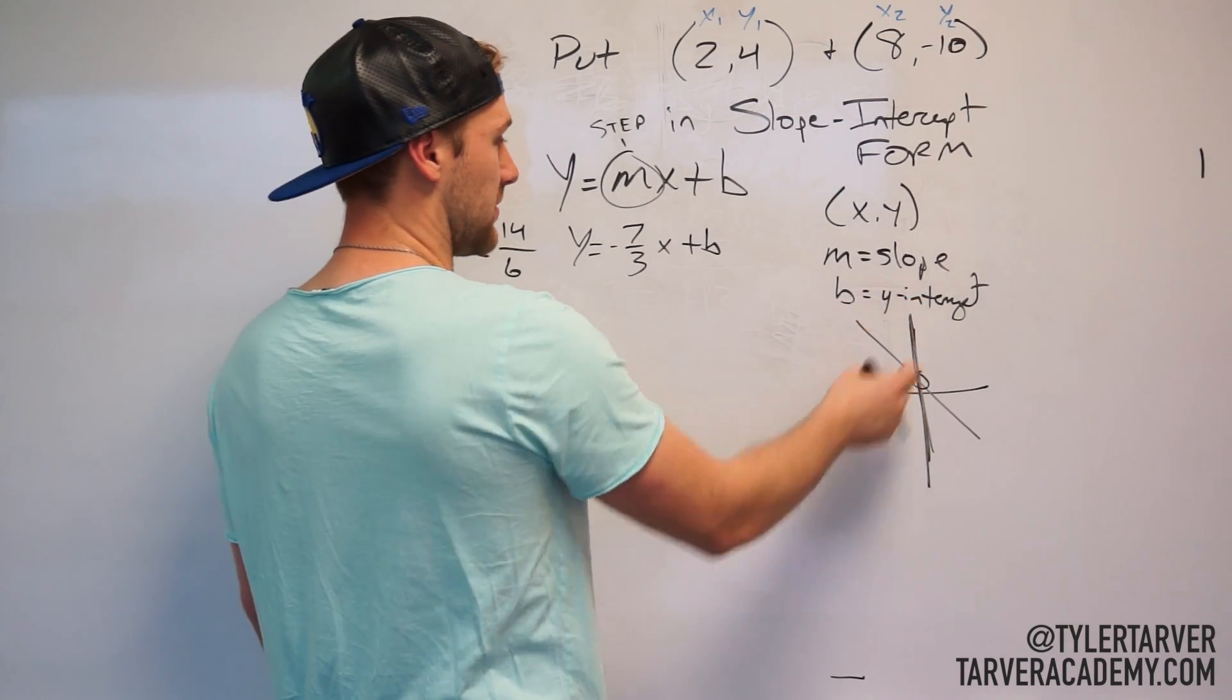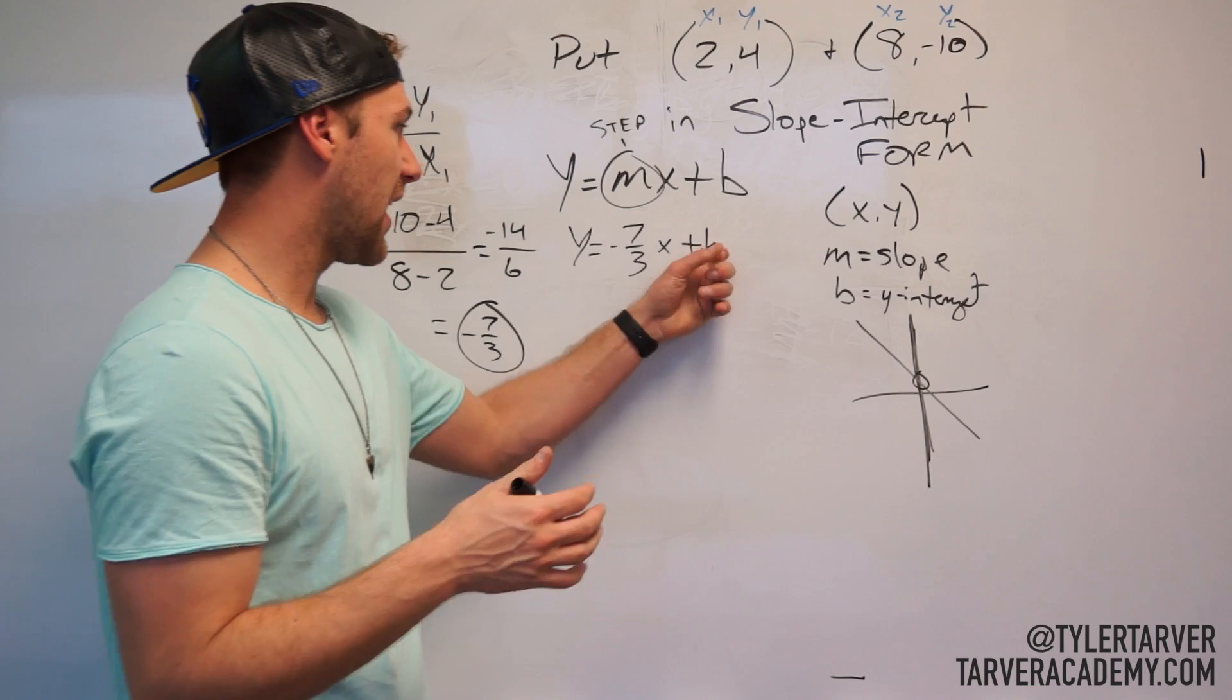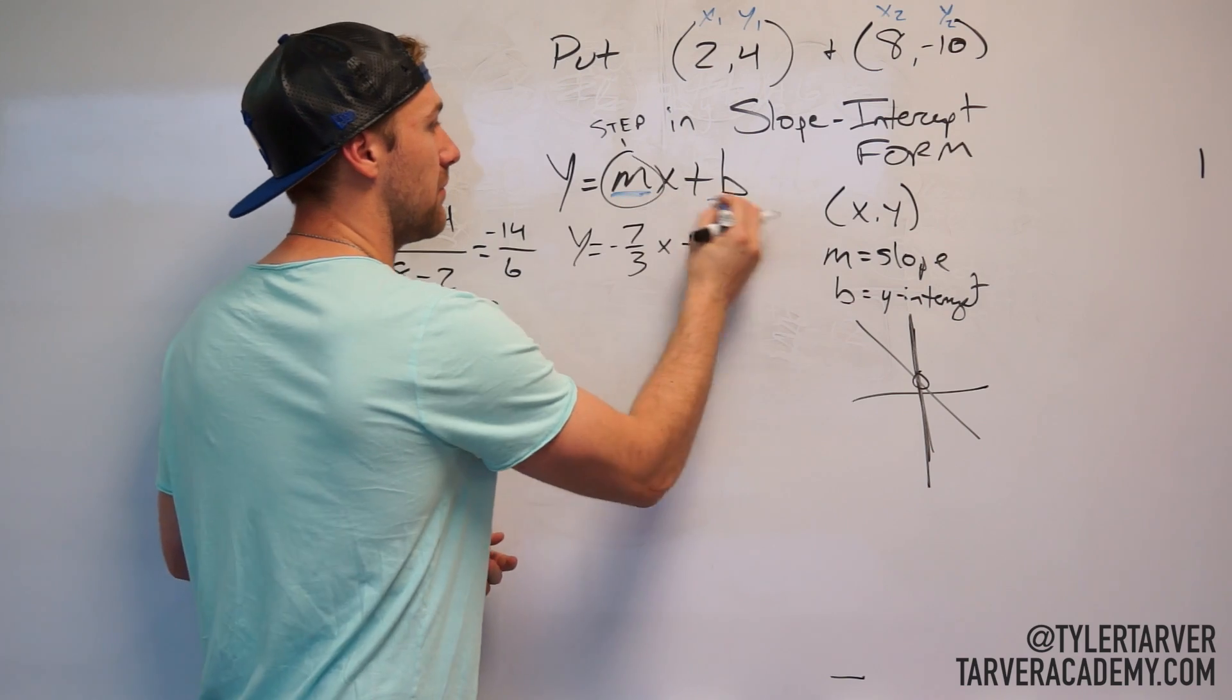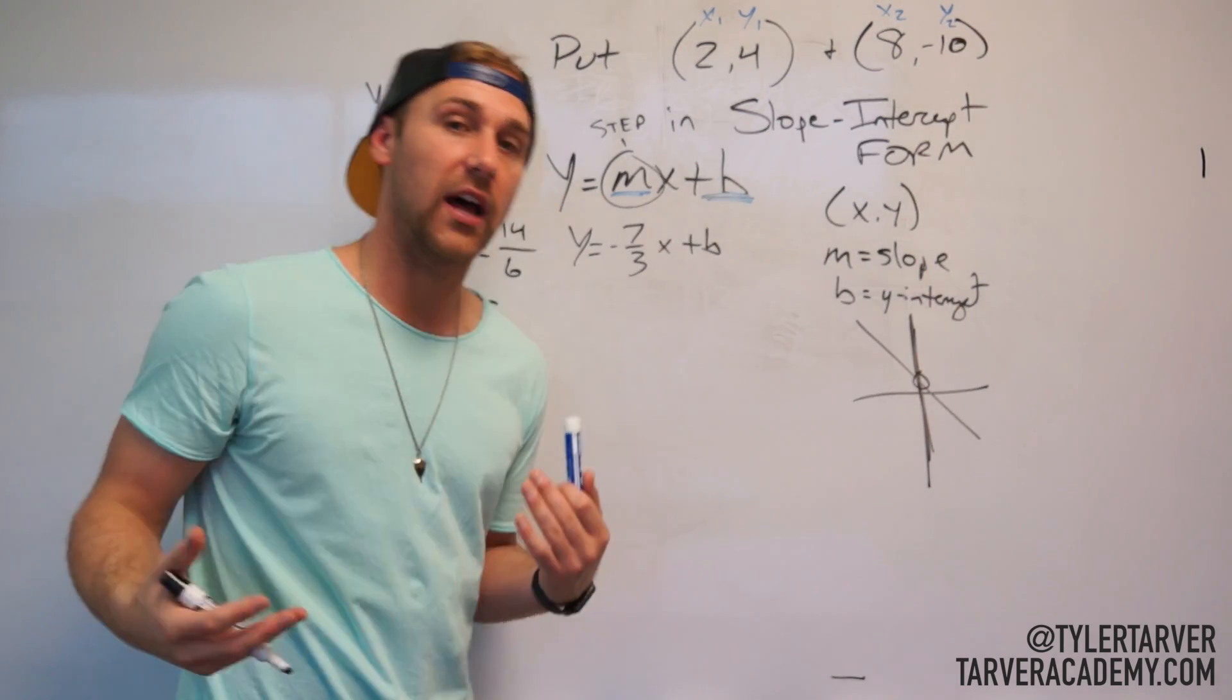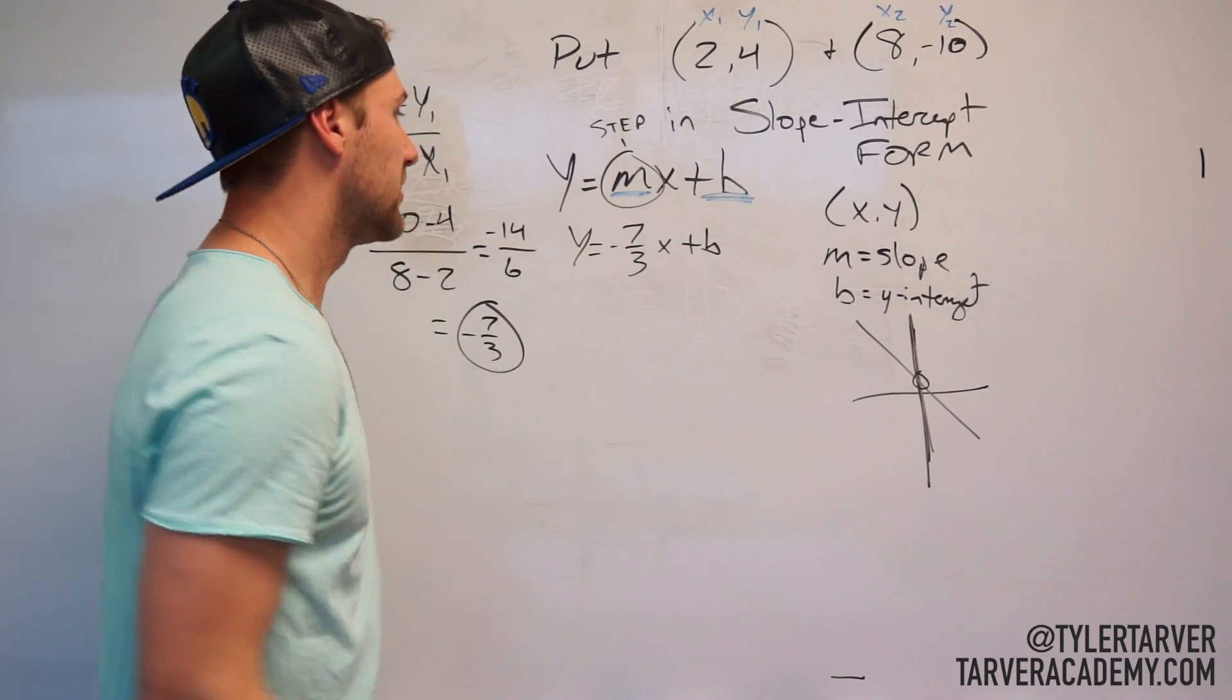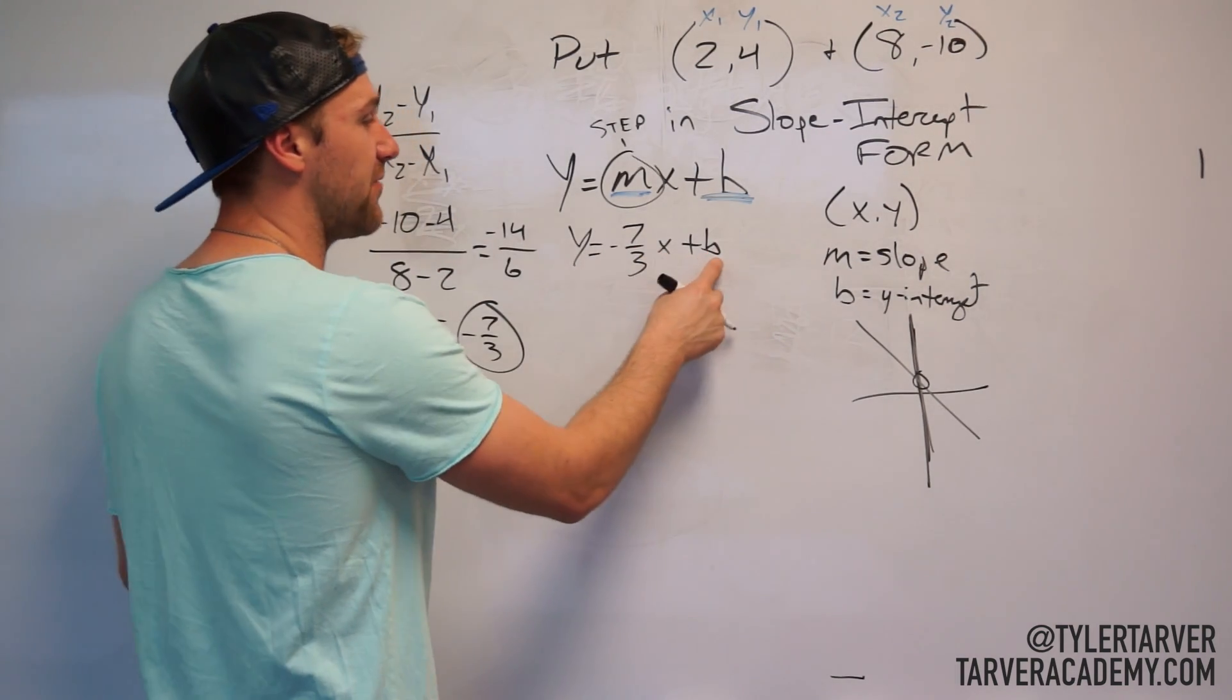And then we got to do our y-intercept, okay? To do our y-intercept, you are going to find that. Like whenever you do slope, all you care about to find the equation for slope-intercept form is your m and your b, okay? We don't care about x and y because that can be any coordinate on the line. You can pick any x in the world and there will be a y attached to it, okay? If it's a straight line. So, and it's not undefined.